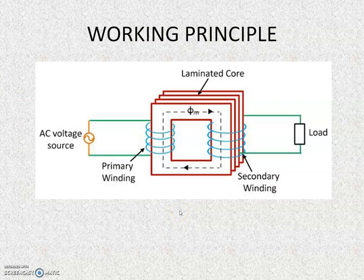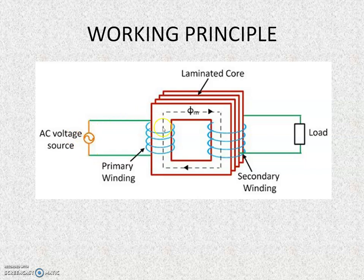The working principle of a transformer can be explained with the help of the schematic diagram shown here. A transformer in its basic form has a laminated core with two sets of windings wound on it. The set of windings to which the AC source voltage is connected is called the primary winding, and the other set of windings to which the load is connected is called the secondary winding.